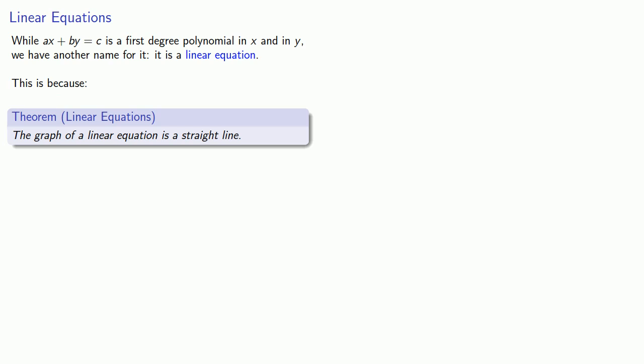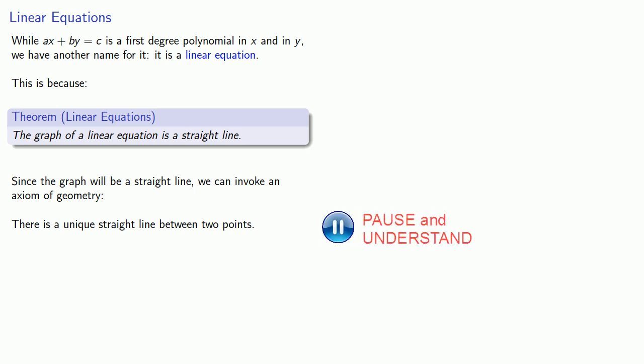The theorem that the graph of a linear equation is a straight line is a very important theorem for the following reasons. Since the graph will be a straight line, we can invoke an axiom of geometry. There is a unique straight line between two points. And this suggests the following approach to graphing this equation.